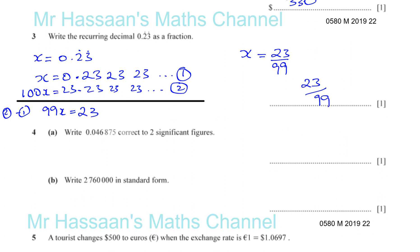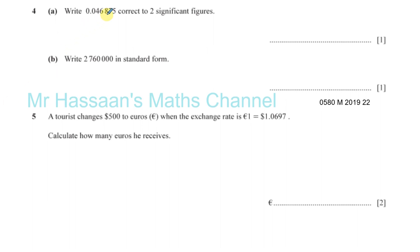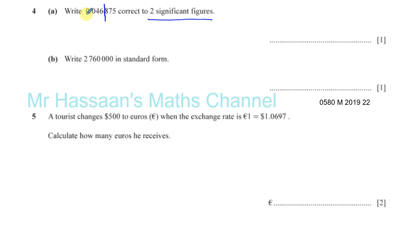That's question number 3. Question number 4: write down 0.046875 correct to 2 significant figures. The first significant figure is the first number that is not a zero, which is 4. The next number after it is 6, so that is the second significant figure. What comes after the 6 is 8, so that 8 rounds the 6 up, giving 0.047.